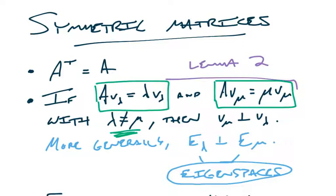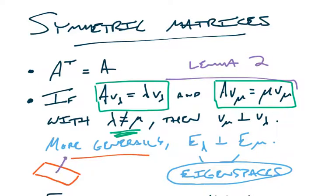We went through the proof of that in the last video. More generally, the eigenspaces for lambda and mu are orthogonal — these are entire vector subspaces. We saw an example where one eigenspace was a two-dimensional plane and the other was one-dimensional, so visually you'd have a purple line orthogonal to a red plane. That purple line is the normal line to the red plane.